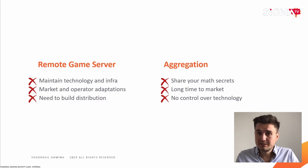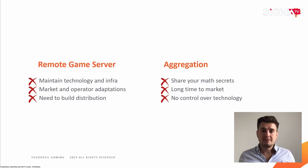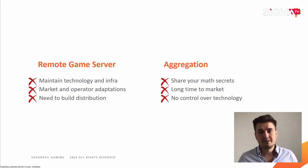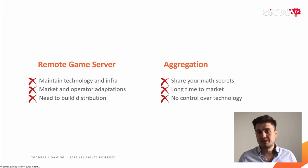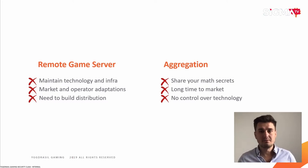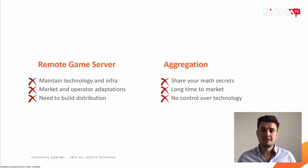The downside of the aggregation network path is that you need to share your math secrets with them, because basically the way it operates is they, based on your specification, develop the game server by themselves. So you don't have control over technology, you don't have control over time to market, and you need to rely on them quite heavily.